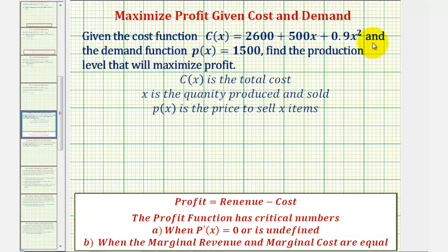We're given the cost function C(x) and the demand function P(x). We want to find the production level that will maximize profit. Since profit is equal to revenue minus cost, let's begin by determining the revenue function.